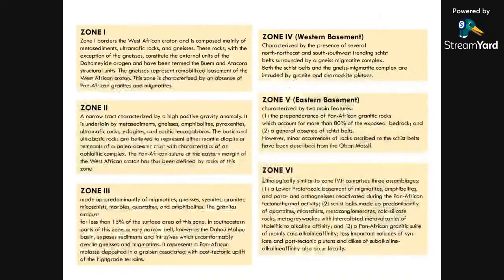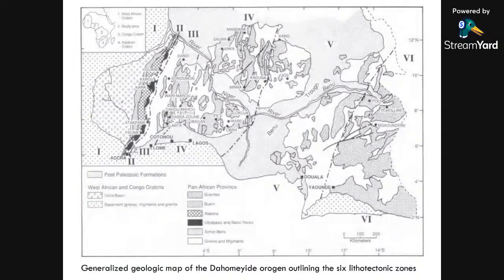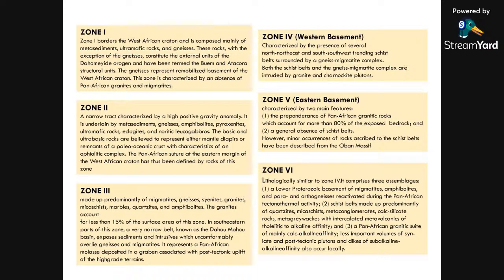Zone one borders the West African Craton and is basically metasediments, ultramafic rocks, and gneisses. Zone two is a narrow tract of high positive gravity anomaly because it is underlain by metasediments, gneisses, amphibolites, pyroxenites, ultramafic rocks, eclogites, and basic rocks. Eclogites are basically related to subducting oceanic crust or the remnant of a paleo-oceanic crust — an ophiolitic complex. This is the suture, and the eastern margin of the West African Craton is within zone two. Zone three is made up of predominant migmatite, gneisses, syenites, and granites.